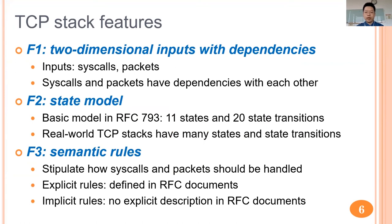To help test TCP stacks, we analyzed different TCP stacks and found three common features. First, a TCP stack receives both packets from network drivers and syscalls from applications as inputs, and outputs syscall results to applications and responds with packets to network drivers — syscalls and packets have dependencies with each other. Second, a TCP stack works according to a basic state model defined in RFC 793, which has 11 states and 20 state transitions, with real-world stacks often having more. Third, each TCP stack works based on semantic rules stipulating how syscalls and packets should be handled, most of which are explicitly described in RFC documents such as RFC 7323.